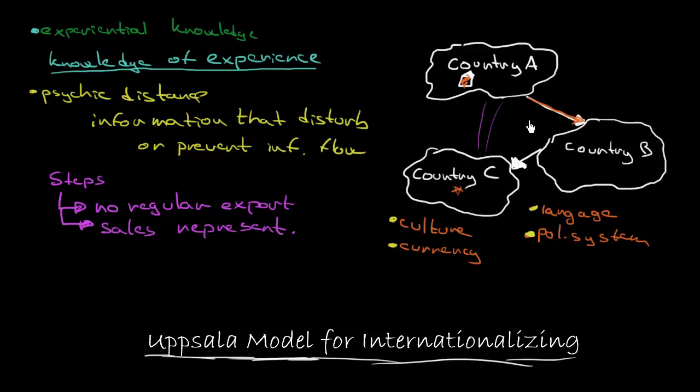Thirdly we create so-called sales subsidiaries. This is a bit tricky but I will move to the fourth step so you will see the difference. Just at fourth step we have some manufacturing subsidiaries. Just at this point we move our manufacturing outside, so until now we were still manufacturing just in our origin country.